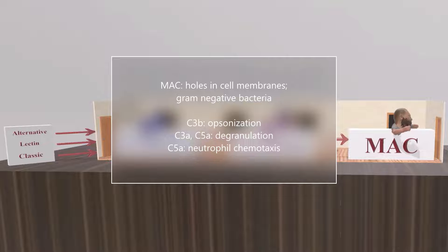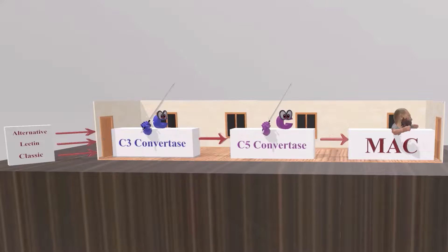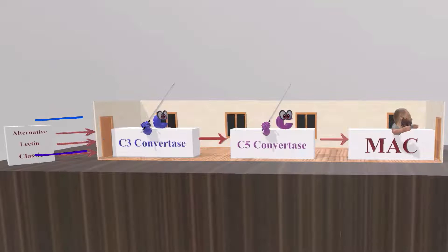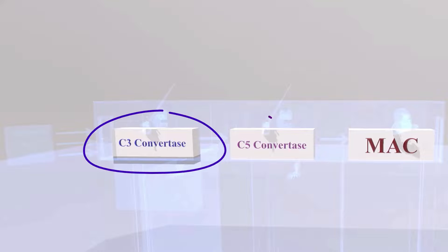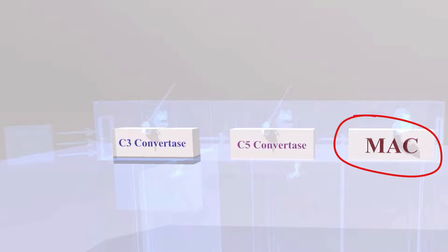If you understand that the purpose of complement is to create these products, then you understand most of what you need to know about the complement system. The complement system can be activated through three different pathways: the alternative pathway, the lectin pathway, and the classic pathway. All three of these pathways converge to produce C3 convertase, then C5 convertase, and then MAC.